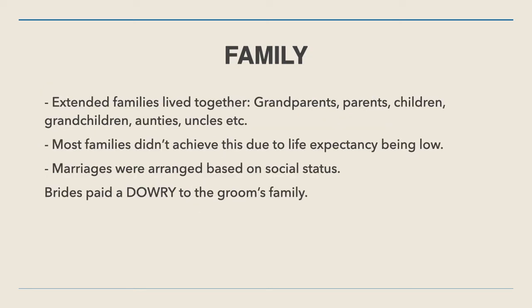Family is very important in society as well, and the ultimate goal is to have extended families living together under one roof within their community — parents, grandparents, children, aunties, uncles, everyone living together. This didn't usually happen because life expectancy in ancient times was so low, and it was very rare that people would live past their 30s. Most families didn't achieve this because of the number of deaths across generations, but that was the aim.